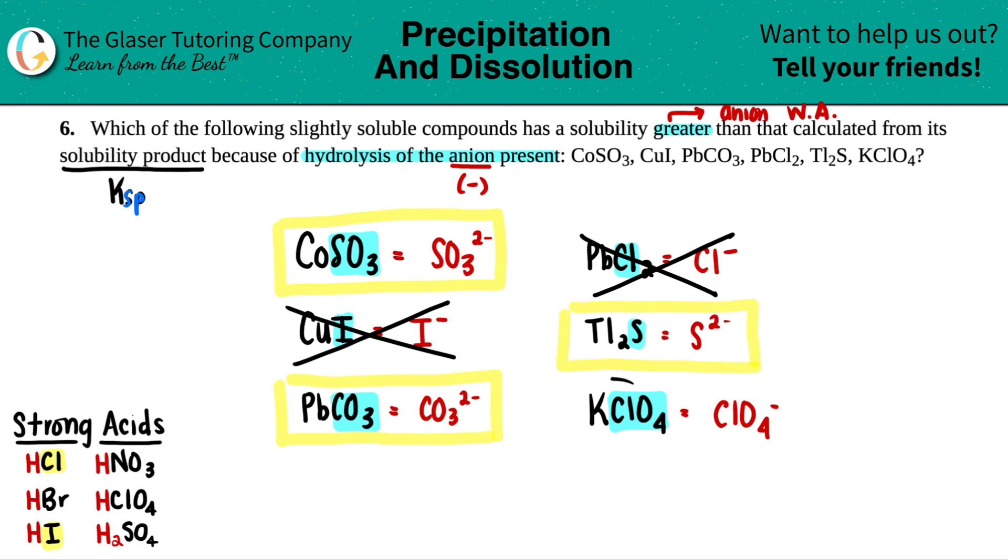And then finally, for KClO4, we have the ClO4 minus. Does that match anywhere here? And yes, it does. Here it is. Here's the ClO4. Since that's part of a strong acid, this would not cause the solubility to increase. We're only looking for weak acid anions. And that's it.